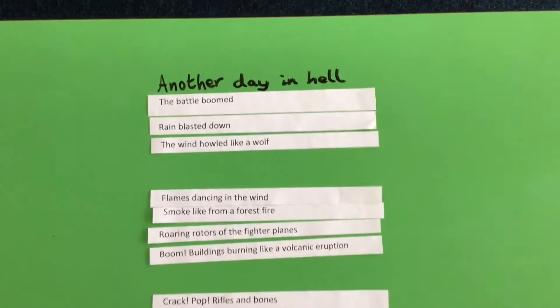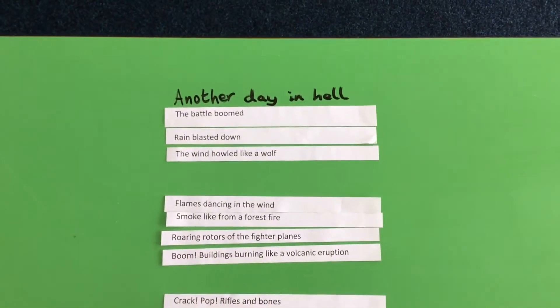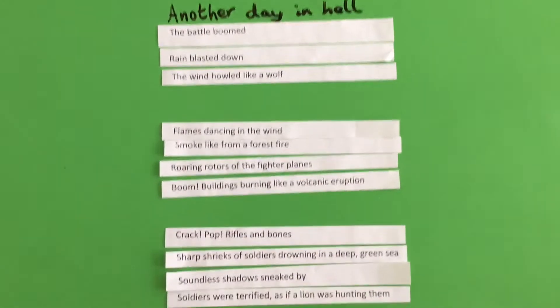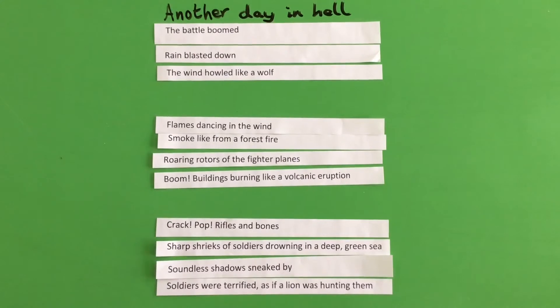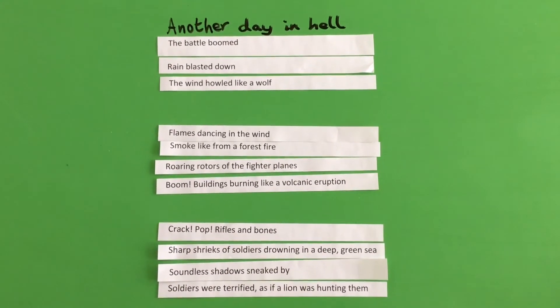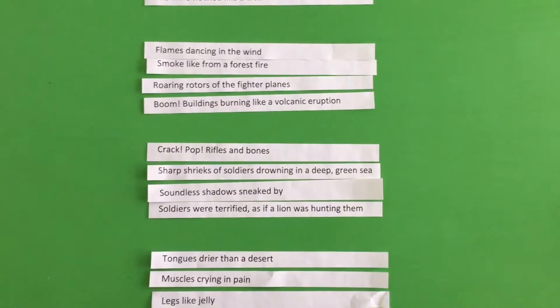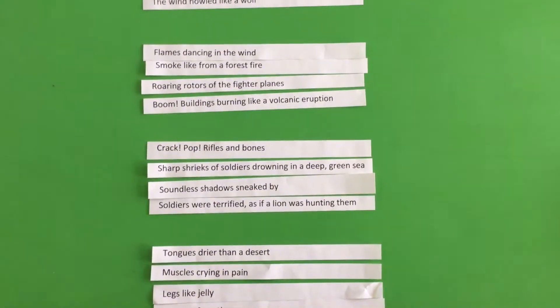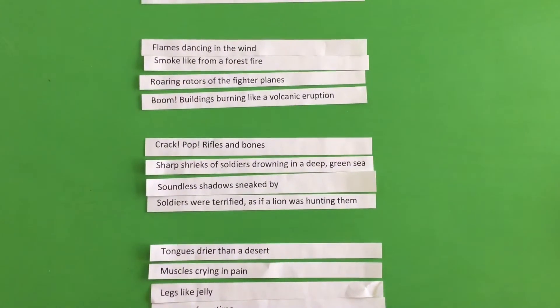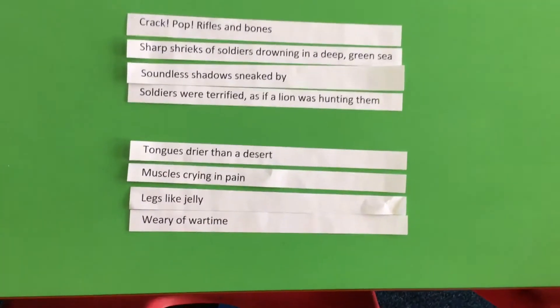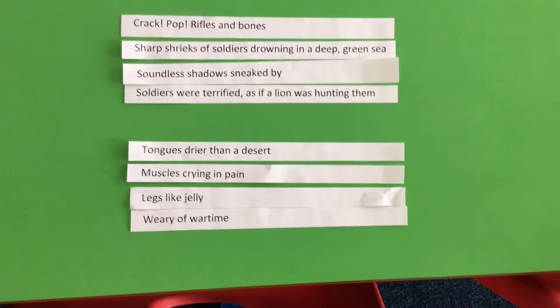It's called Another Day in Hell. Another Day in Hell, the battle boomed, rain blasted down, the wind howled like a wolf. Flames dancing in the wind, smoke like from a forest fire, roaring rotors of the fighter planes. Boom, buildings burning like a volcanic eruption. Crack, pop, rifles and bones, sharp shrieks of soldiers drowning in a deep green sea. Soundless shadows sneaked by, soldiers were terrified as if a lion was hunting them. Tongues drier than a desert, muscles crying in pain, legs like jelly, weary of wartime.